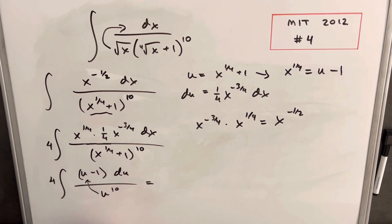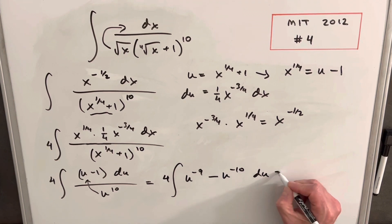When we divide this in, we'll end up with two terms. So let's see how this is going to look. We'll have four u to the minus ninth, dividing into the u, and then we'll have a minus u to the minus tenth du. And we'll just integrate this.